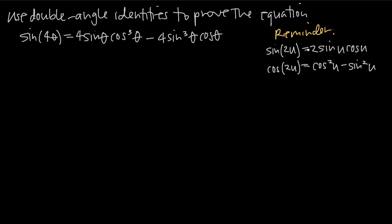Right away with this problem, even if we weren't told to use double angle identities but wanted to prove this, we would know that double angle identities would be a great place to start, because we have sine of 4 theta — a double double angle. Over here on the right-hand side, all of our angles are just in terms of theta. So a good path to proving this equation, to getting the left and right-hand sides to be exactly equal, would be to reduce the angle from 4 theta down to 2 theta, and then down to theta, and see if we can get it to match the right-hand side.